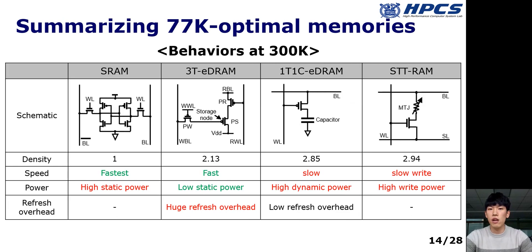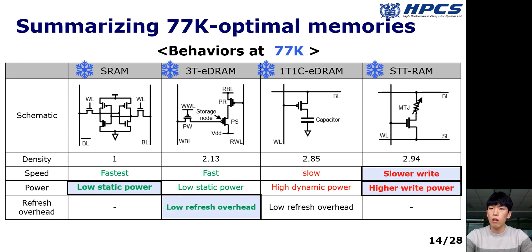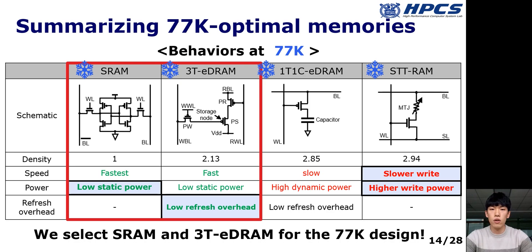This is the summary of the analysis. The table shows memory behavior at room temperature. At 77K, the low temperature makes SRAM and 3T-DRAM much better, but makes 1T1C DRAM and STT-RAM less attractive. Therefore, we select SRAM and 3T-DRAM for the cryogenic cache design.